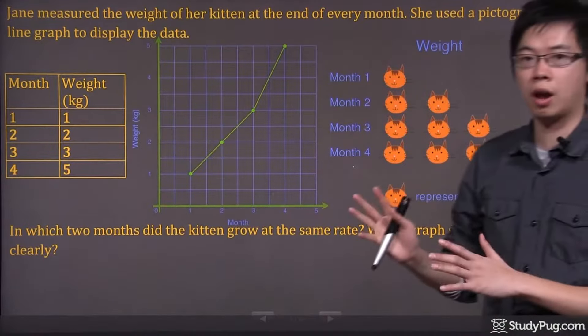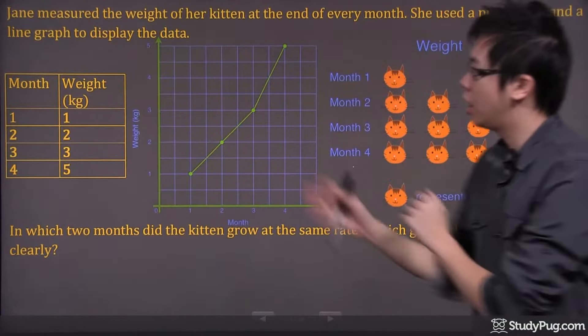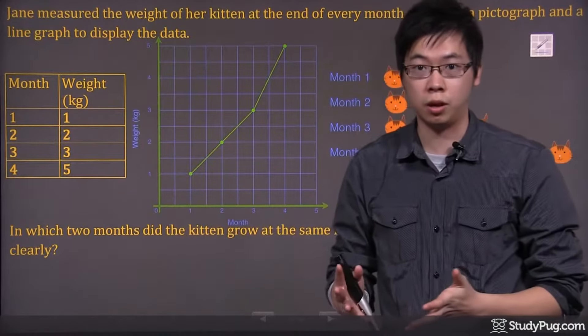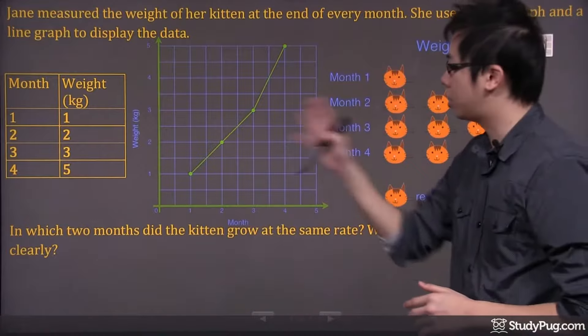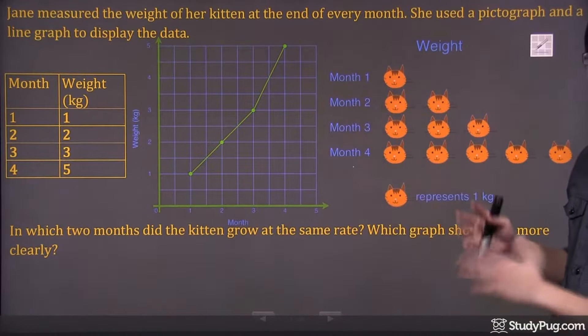She used two different graphs. One's a pictograph over here using the pictures, and the other one using the lines. It's called a line graph. It's exactly the same data, but she used a line graph and a pictograph to represent the data.